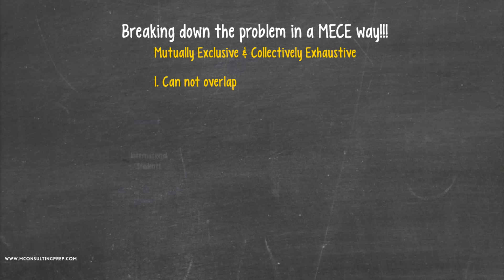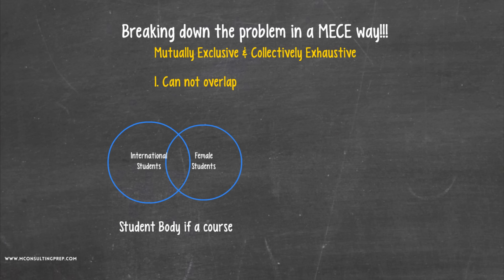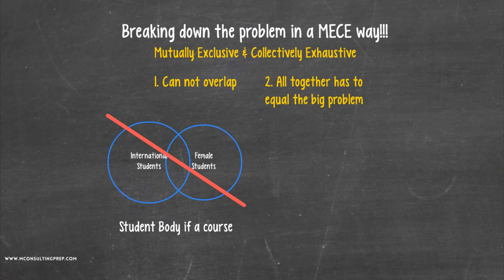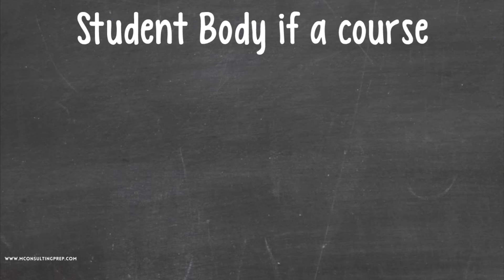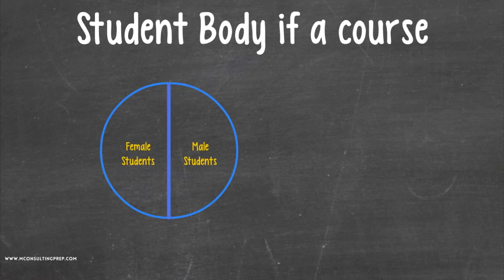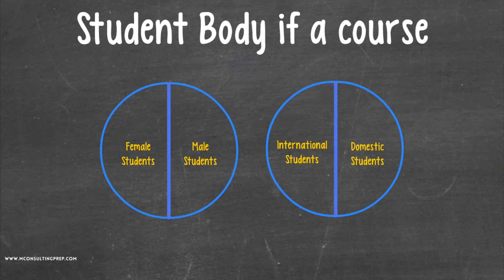First, the small pieces cannot overlap with each other — this is mutually exclusive. For example, a non-MECE way to break down the student body of a course is a group of international students and a group of female students, since these two groups do overlap. Second, those small pieces all added together must equal the big problem. A non-MECE example is breaking down students by those from China and those from the United States, since those two groups combined do not necessarily equal the total student body.